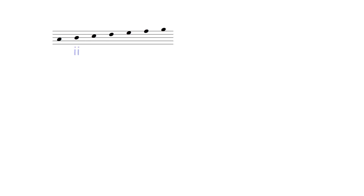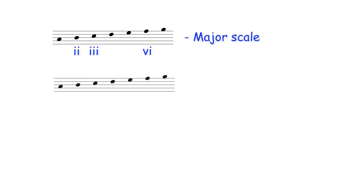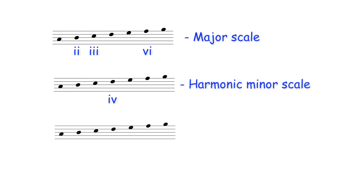Minor 7th chords occur on the supertonic, mediant, and submediant of a harmonized major scale, the subdominant of a harmonized harmonic minor scale, and on the supertonic of a harmonized melodic minor scale.